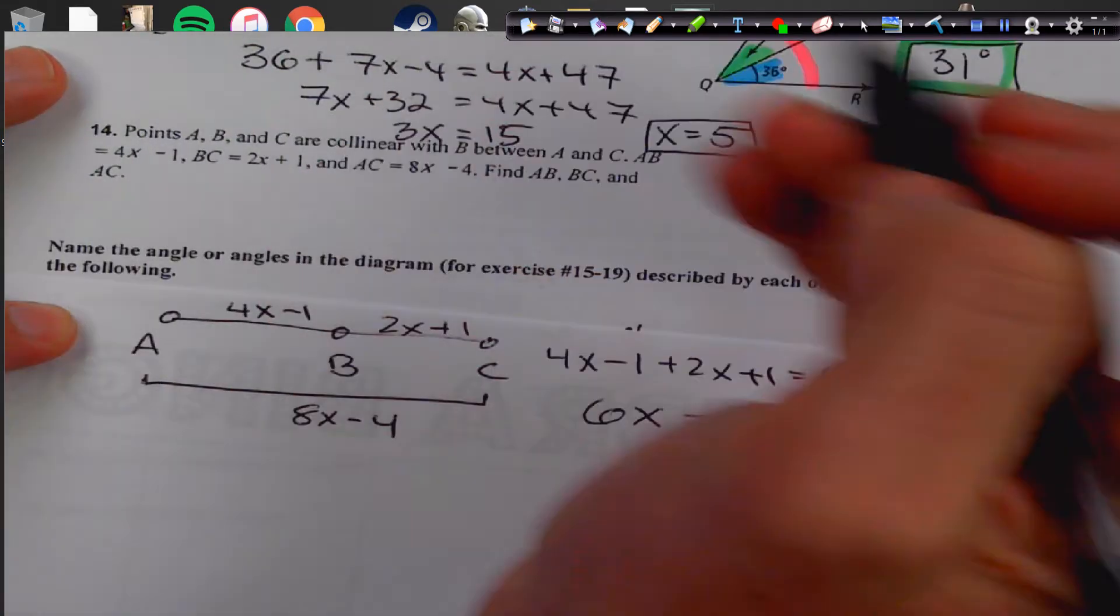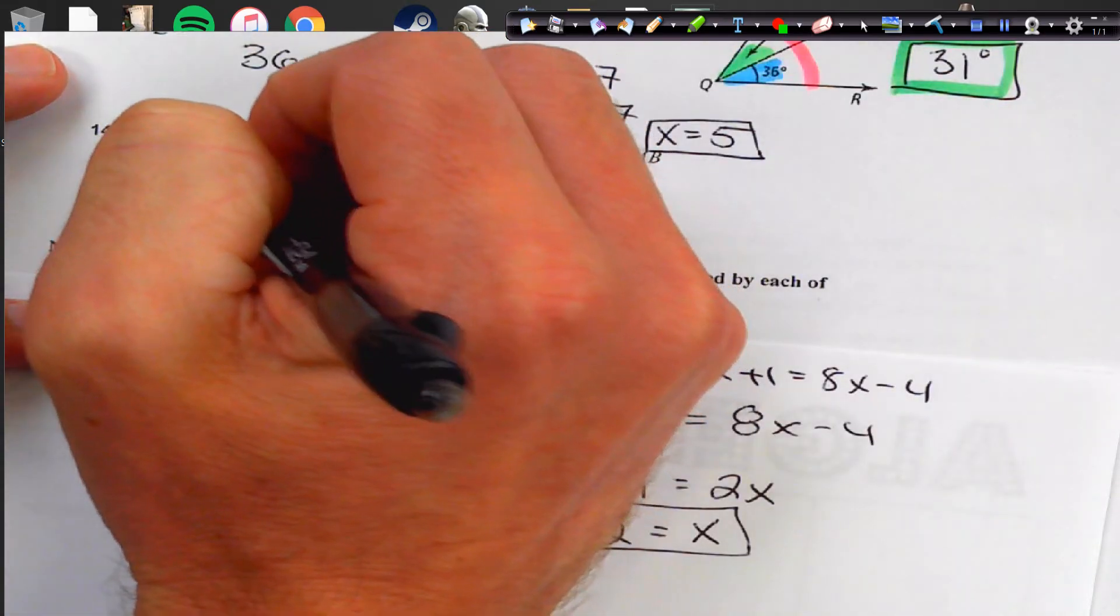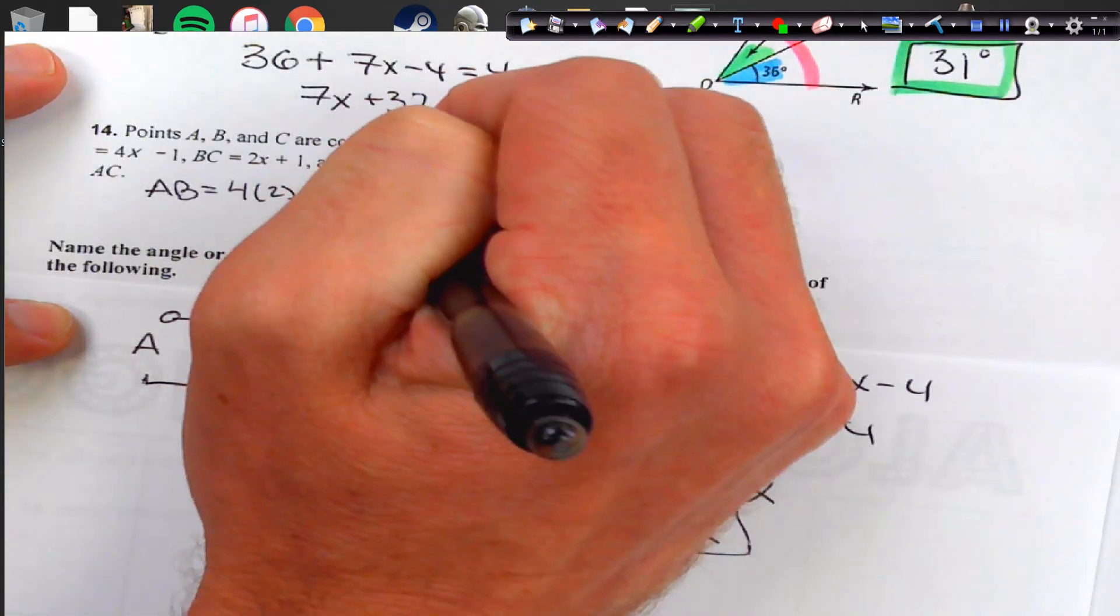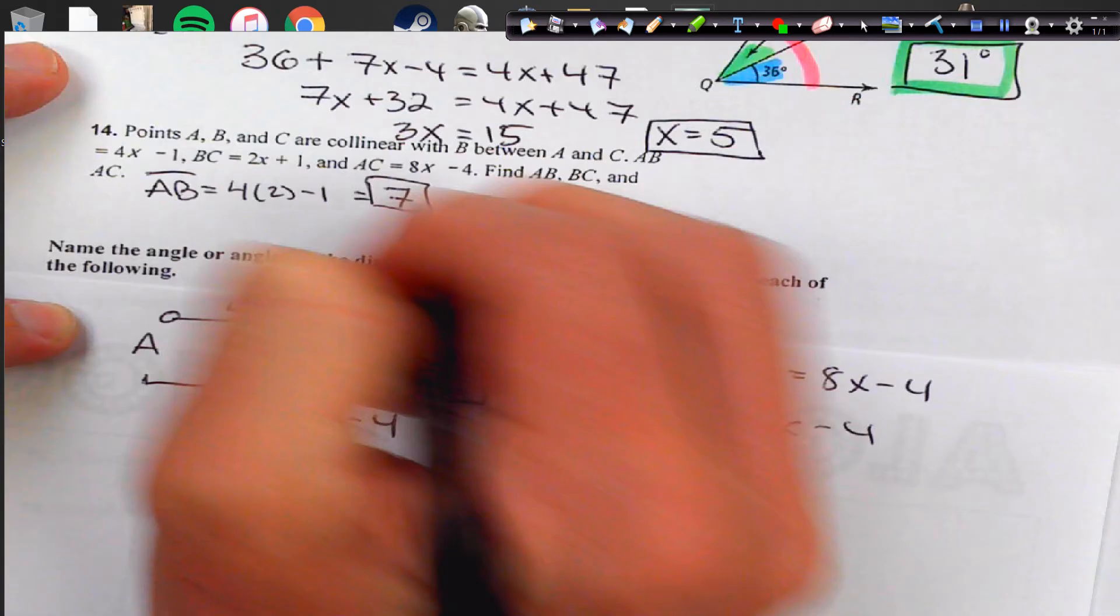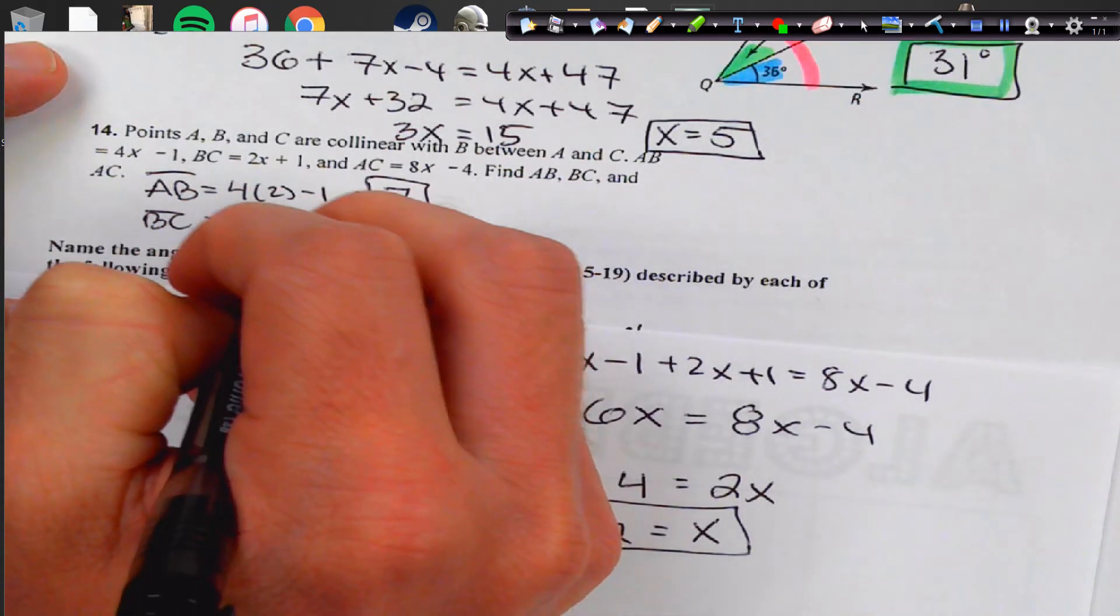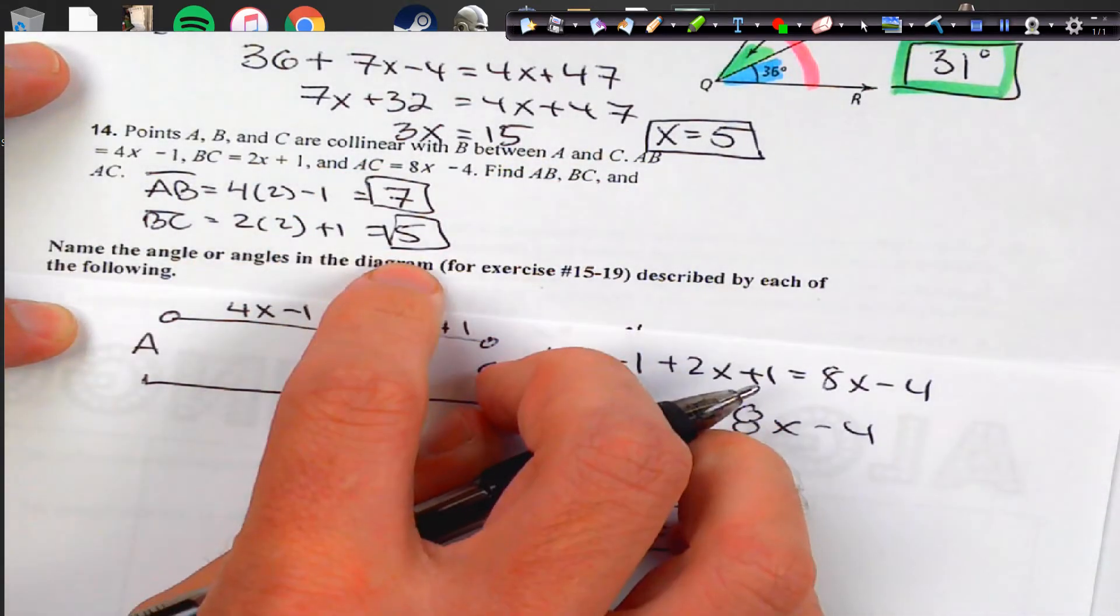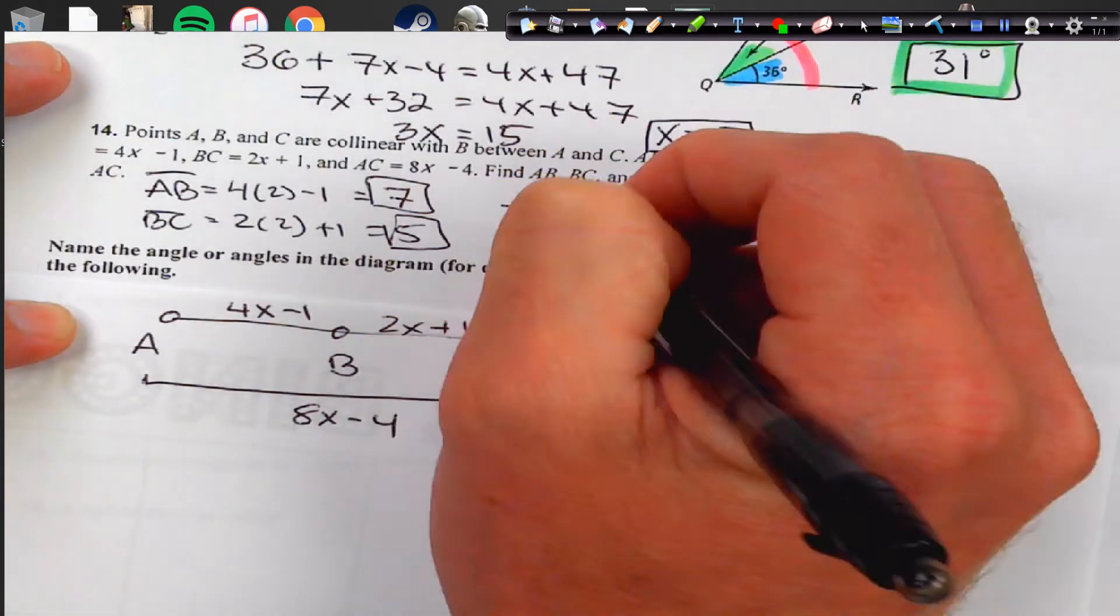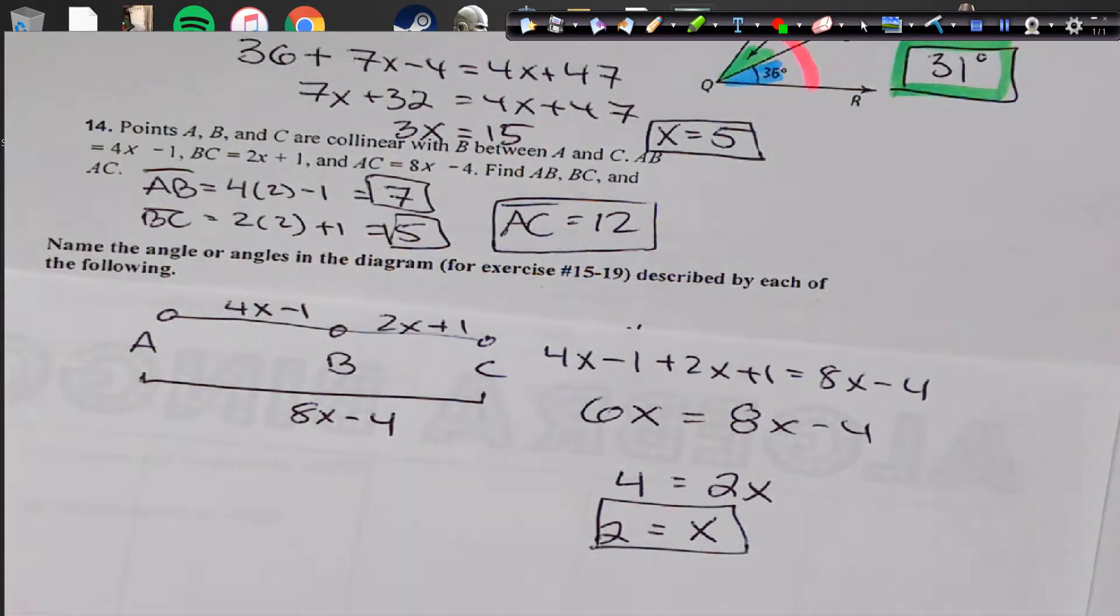I'm going to subtract the 6x this way, and add the four over here, and then divide by two, x will equal two, and then we've got to plug it in to find all the other segments, AB, BC, and CD. AB is going to be 4 times 2 minus 1, that's going to be 8 minus 1, which would give us seven, and then BC is going to be 2 times 2 plus 1, that's going to be 4 plus 1, which is five, and if I get seven and five, you add those together, we should get the length of AC, which is going to be 12, okay?